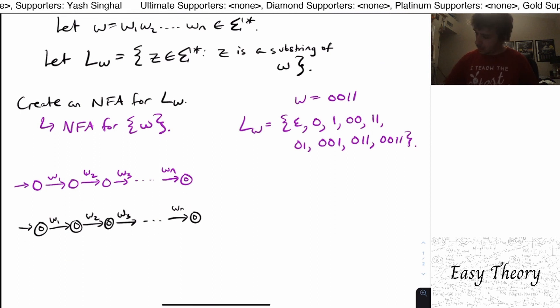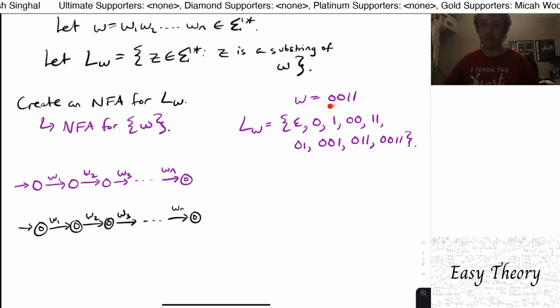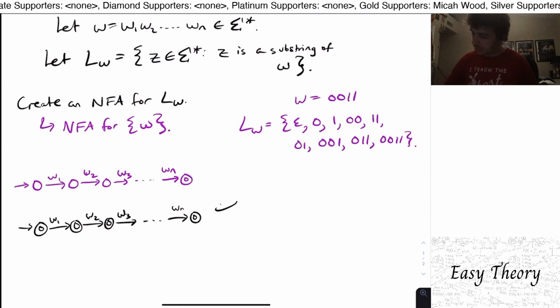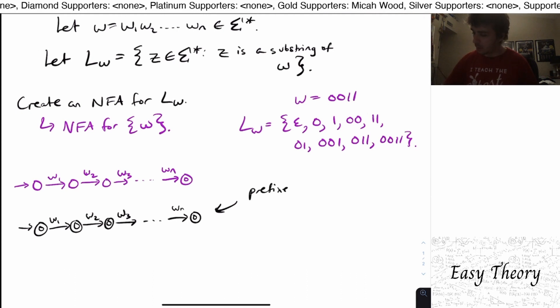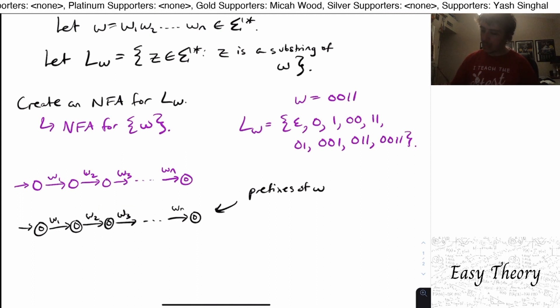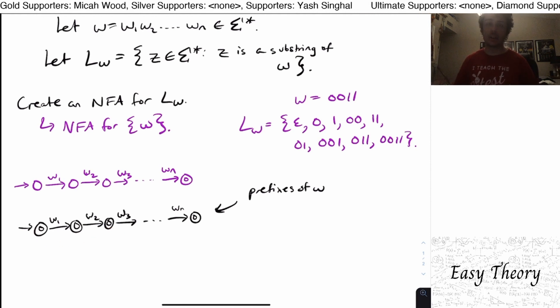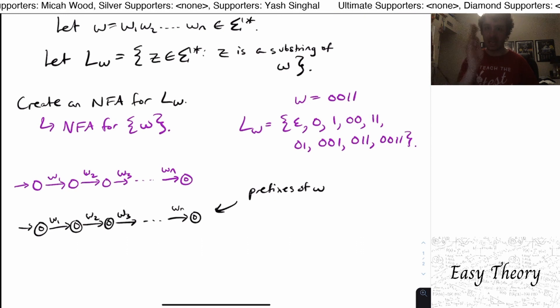Well, notice here that say for the string, substring 01, that's not necessarily at the front of the string. So what this actually does, this little NFA here is actually the prefixes of w. If we just leave it like this, because we could just accept the empty string or just a single character w1 or w1 w2 or w1 up to w3, etc. So it gets all the prefixes of w, the beginnings of the string.